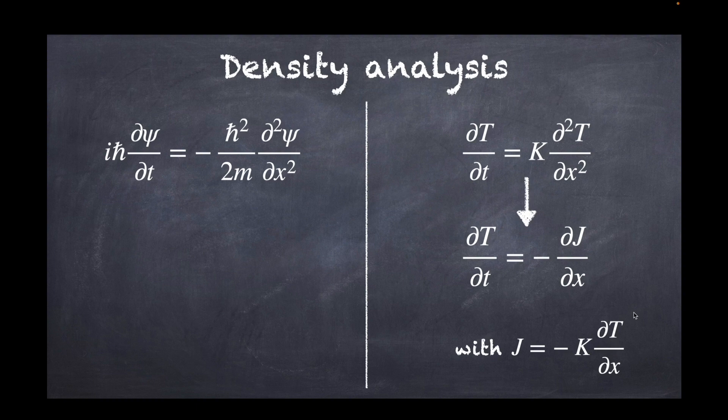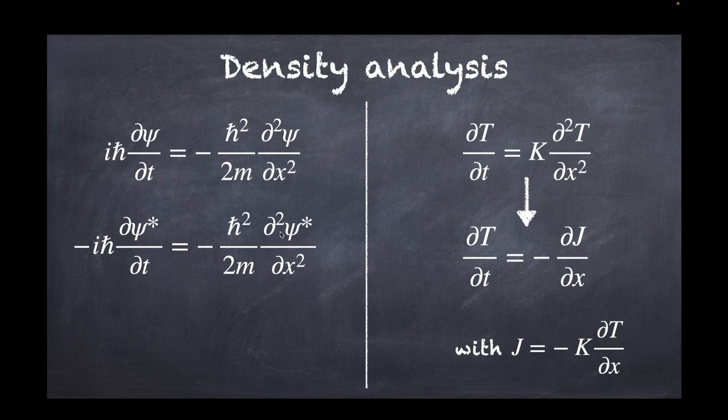Now let's look at Schrödinger's equation. In this particular case, because it's a complex quantity we're looking at, it turns out that there is a dual twin equation which has to do with the equation followed by the complex conjugate of psi, which is minus ih bar d psi star over dt equals minus h bar squared over 2m times the second order derivative in space of psi star.